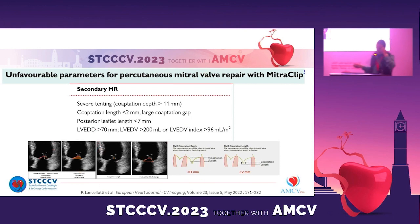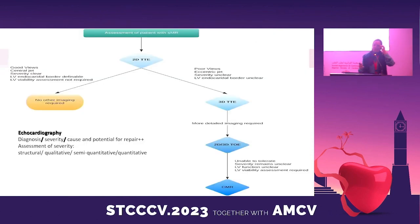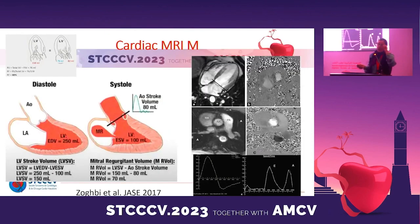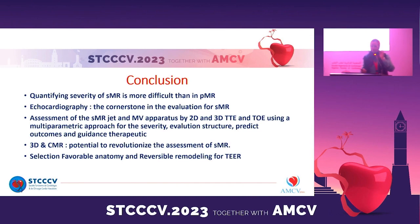These criteria were published last year by EACVI and EACVI. When we have mitral regurgitation, the first step is transthoracic echocardiography. If we can answer about severity and LV function, that is sufficient. If not, we perform transesophageal echocardiography coupled with 3D. If that is also inconclusive or intolerable by the patient, we move to cardiac MRI, which can evaluate regurgitation volume using contrast phase imaging.